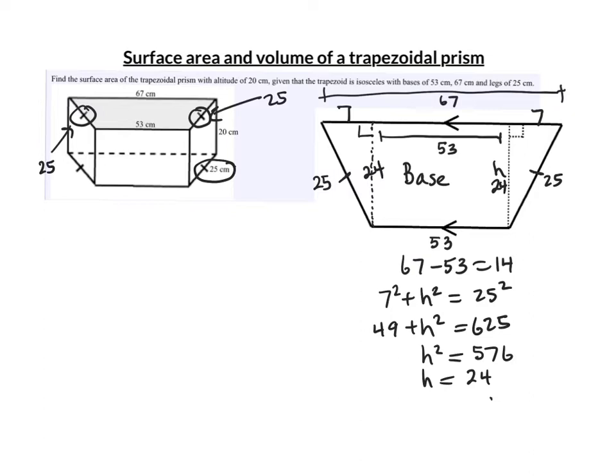Now I can find the area of the trapezoid because I'm going to need that for the surface area and volume both. The area of the trapezoid will equal the average of the two bases, which are the parallel sides, 53 plus 67 divided by 2, the average of the bases times the height, which is the distance between the bases, which we figured out with the Pythagorean theorem was 24. Let's simplify this.